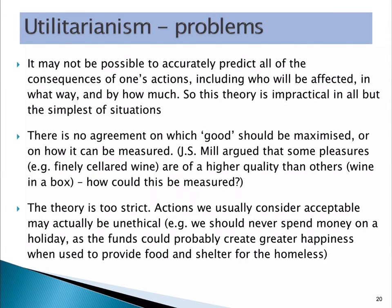Just as with ethical egoism, there are some problems with utilitarianism. One of the problems we run into is: can we really accurately predict what's going to happen when we take an act? Can we even know who's going to be affected, in what way, and how much? This theory starts to become impractical in most real-life situations.